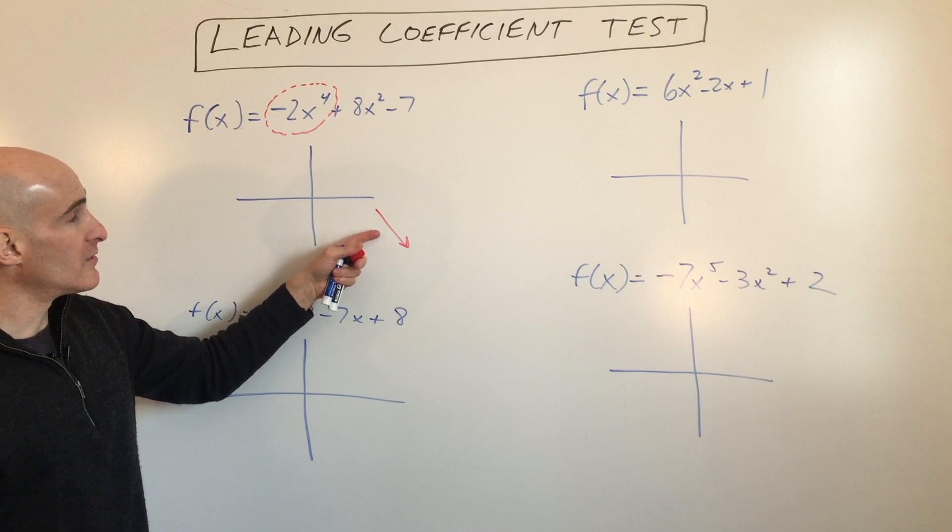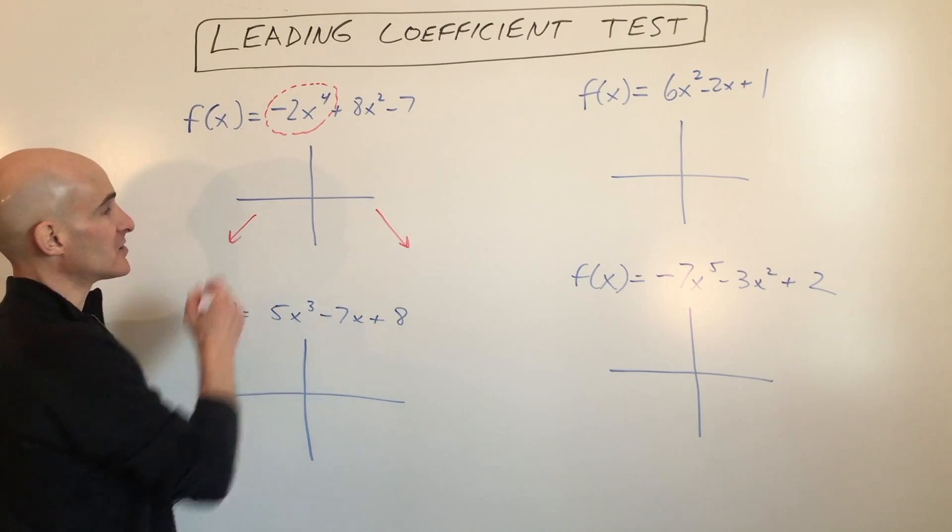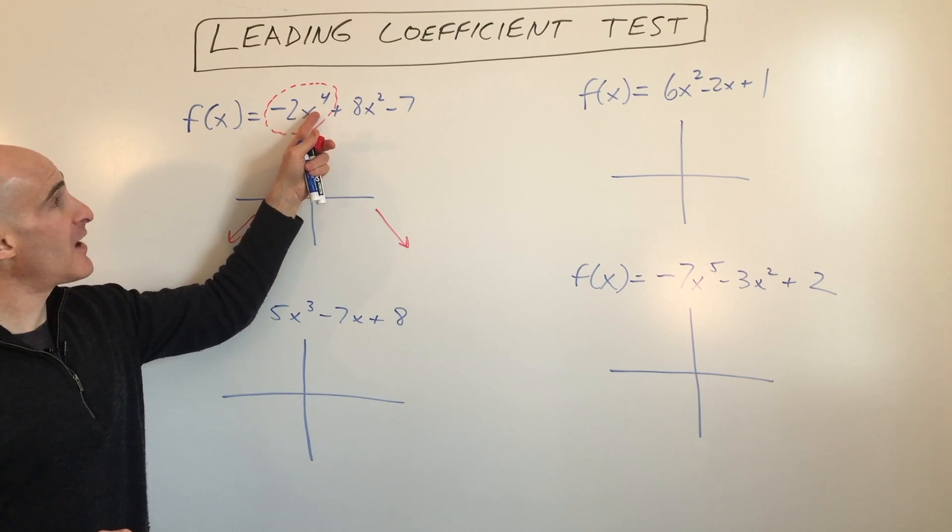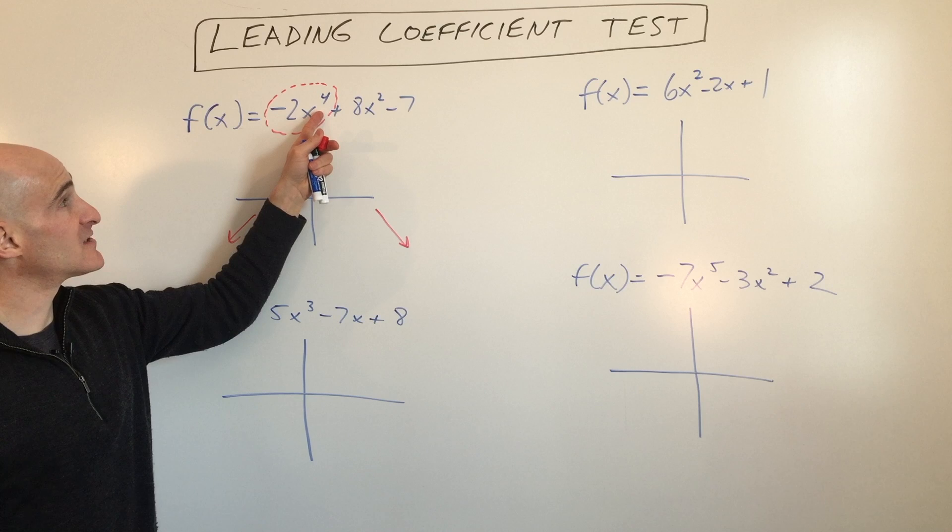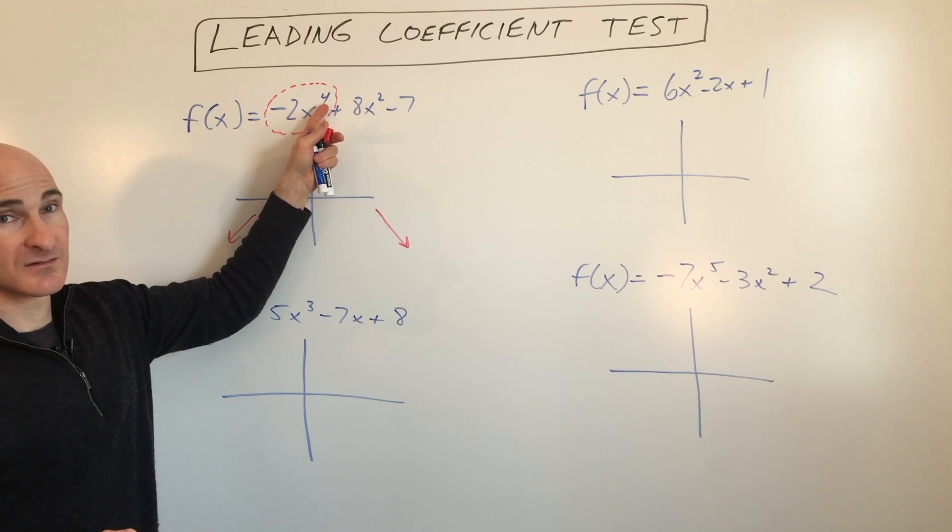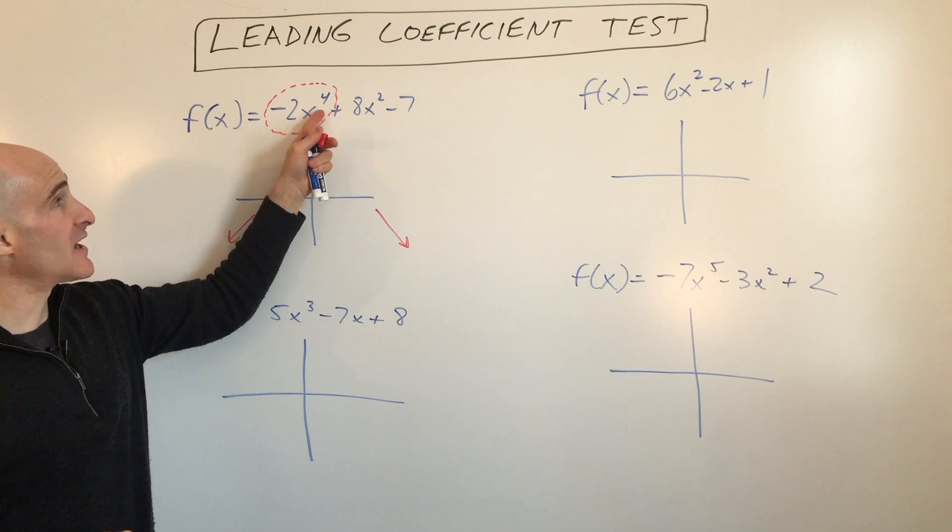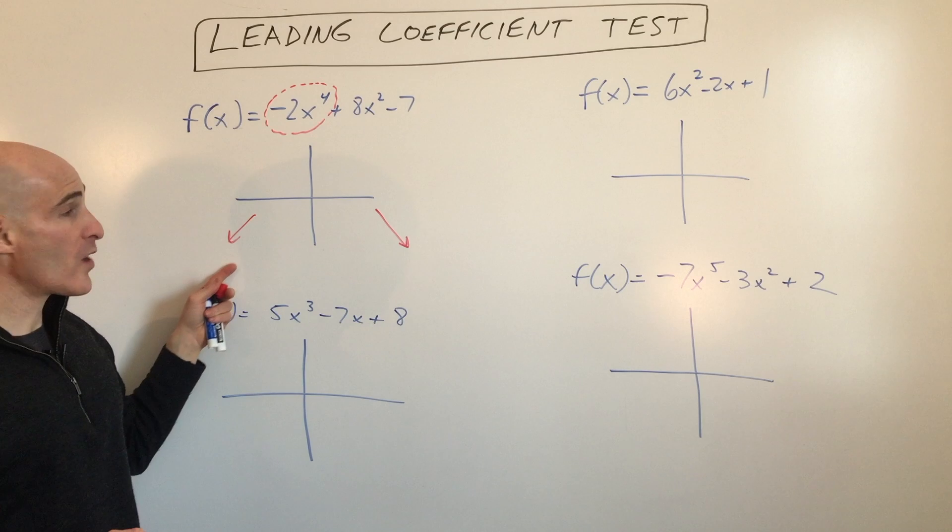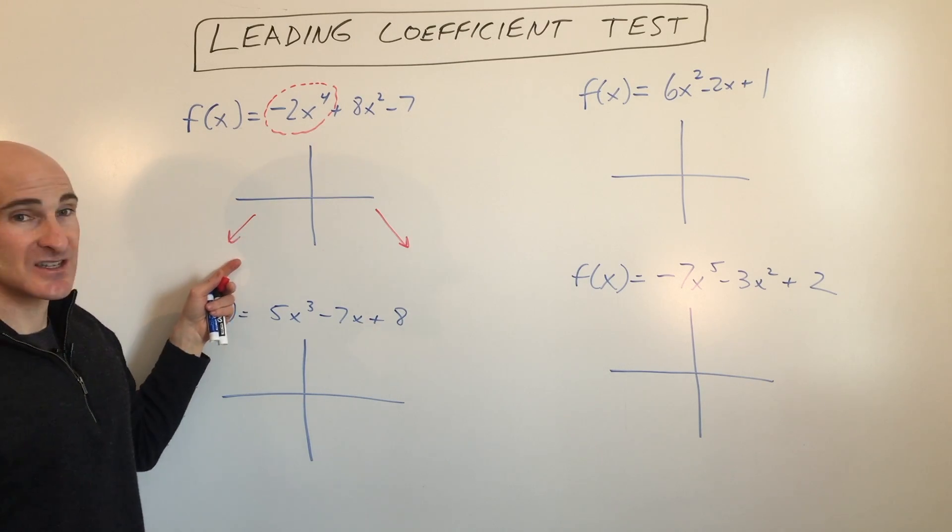So this one's going down, this one will be the same direction. If you want to test it out to prove it to yourself, pick a value of x, like negative 10. Negative 10 to the fourth power is positive 10,000 (because a negative to an even power is positive), but then times negative two makes it negative 20,000. You can see this is decreasing—it's becoming a very large negative number.